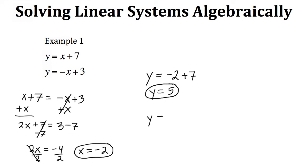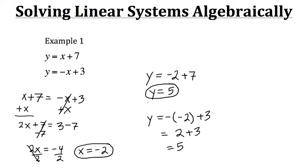So we have y equals negative x, where our x is negative 2, and then plus 3. Well negative negative 2 is a double negative, which changes to positive 2, and then plus 3. Well 2 plus 3 does give us a y value of 5. So we know that our solution is correct. For this particular system of linear equations, the solution would be when x is negative 2 and y is 5. We could also express that solution as an ordered pair: (negative 2, 5).